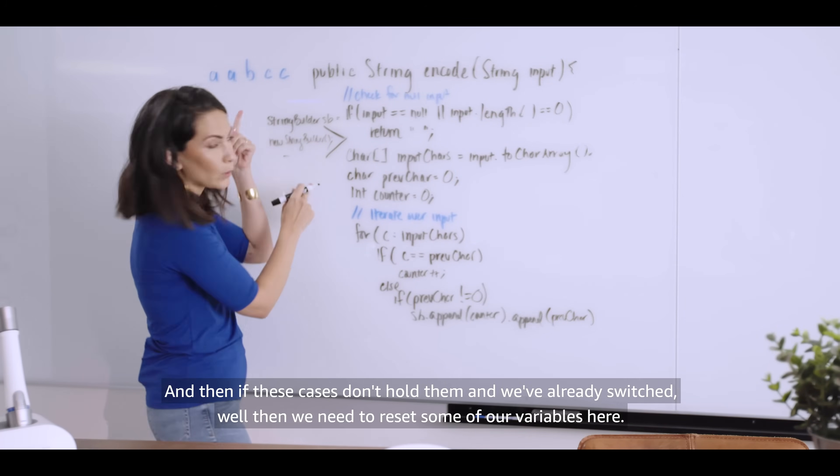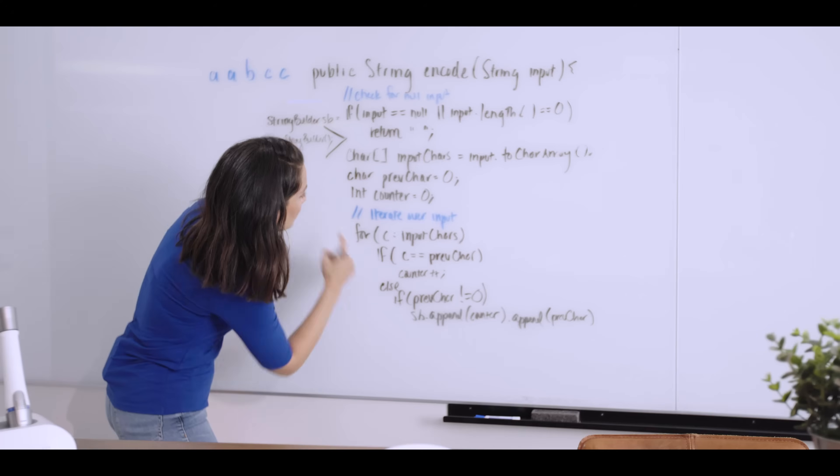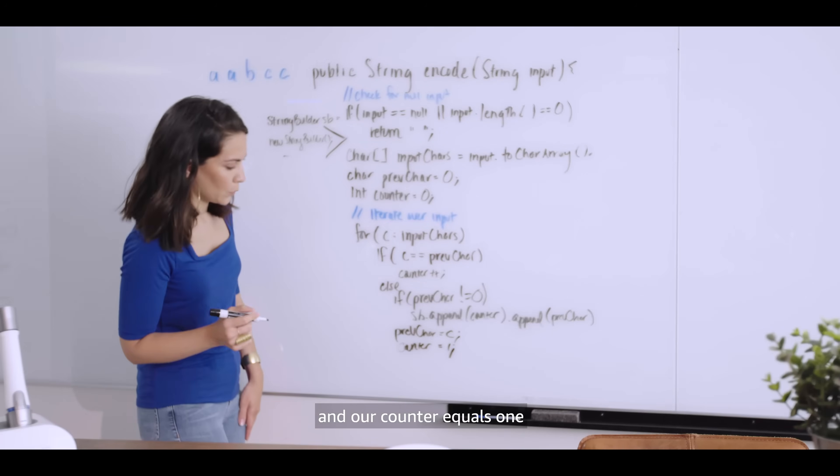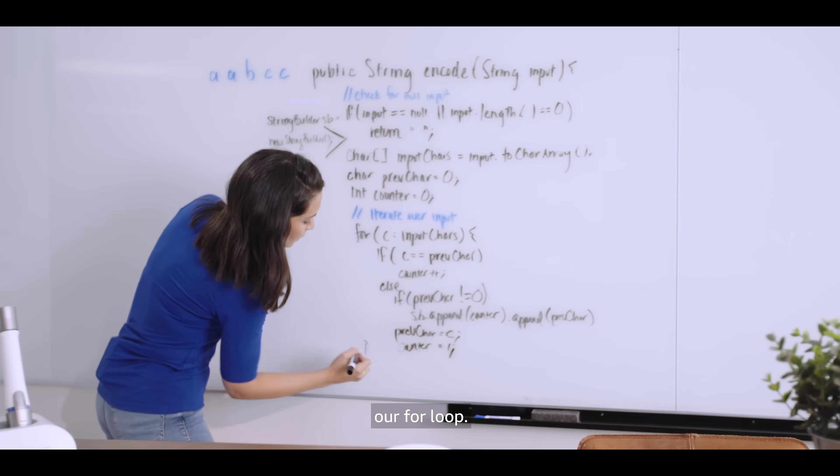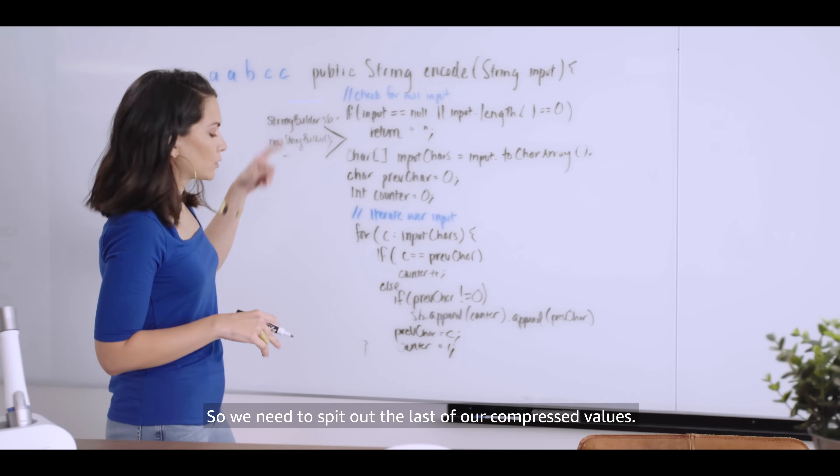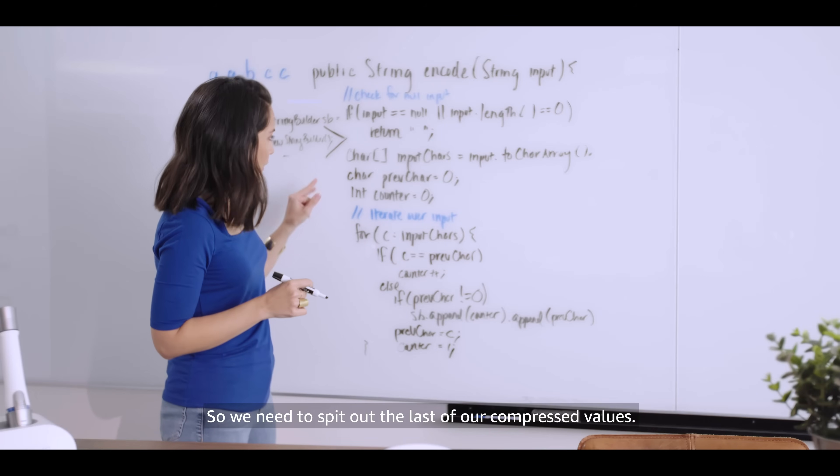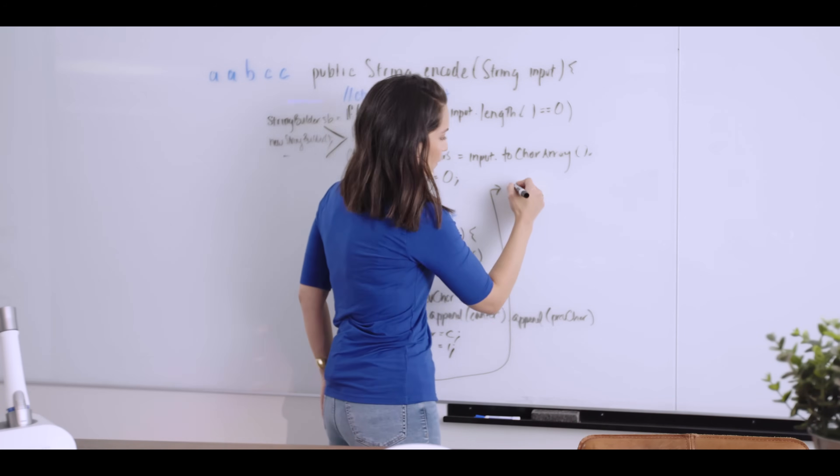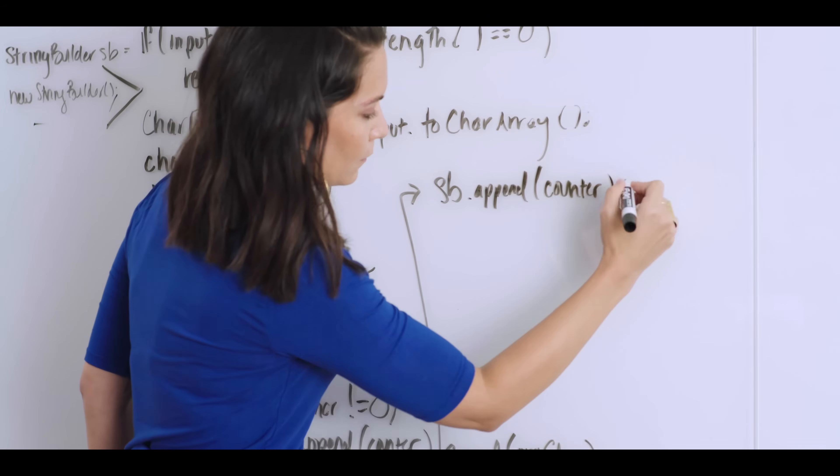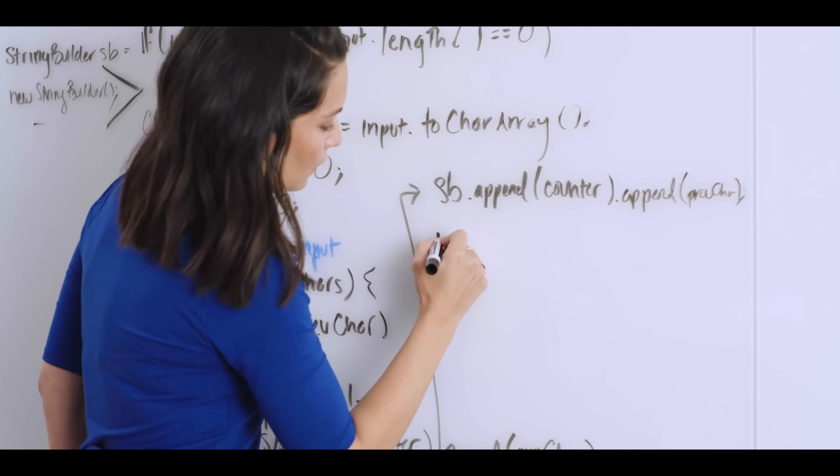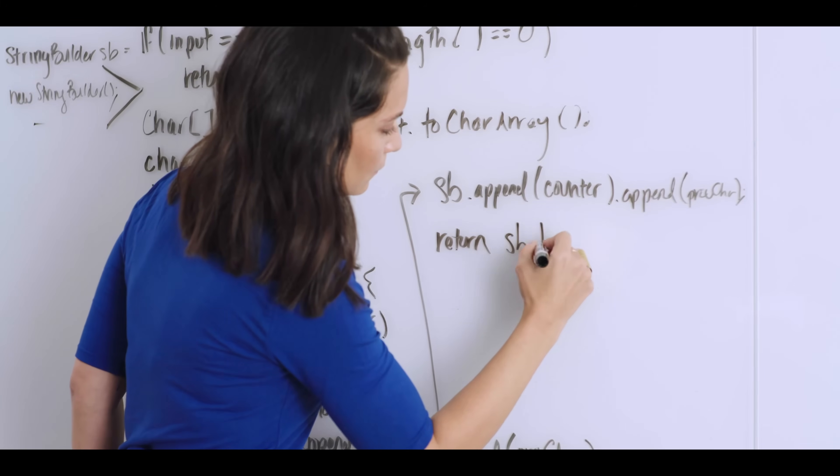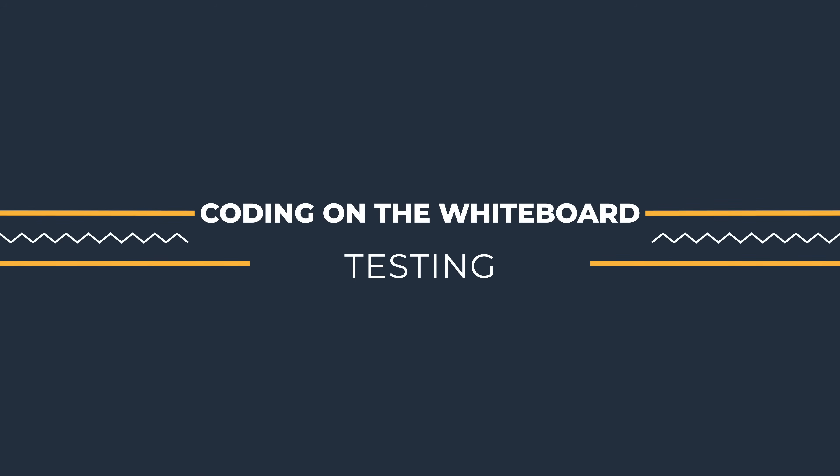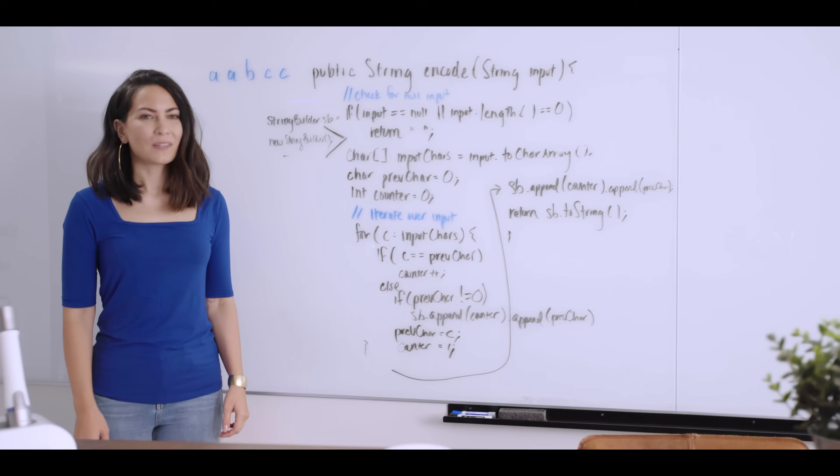So now that we have our string builder, we can actually go and append the previous char and whatever the counter value is. And then if these cases don't hold, we've already switched. Well, then we need to reset some of our variables here. So we're going to say, previous char is equal to the new char that we're iterating through. And our counter equals one. And that terminates our for loop. But that means we've reached the end of our input array. So we need to spit out the last of our compressed values. So I will just make it very clear that I'm continuing my code over here. And then finally, I'll return the string. So we have our implementation.